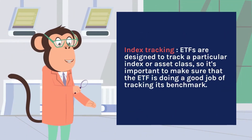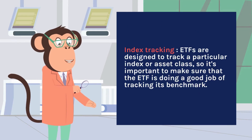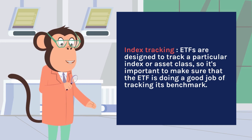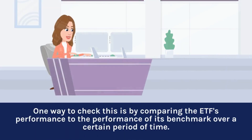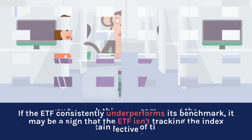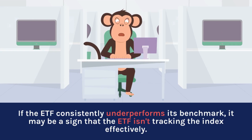The next factor is index tracking. ETFs are designed to track a particular index or asset class, so it's important to make sure the ETF is doing a good job tracking its benchmark. One way to check this is by comparing the ETF's performance to its benchmark over a certain period of time. If the ETF consistently underperforms its benchmark, it may be a sign that the ETF isn't tracking the index effectively.